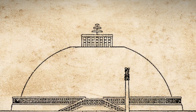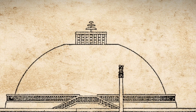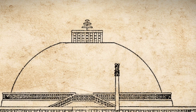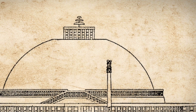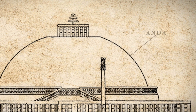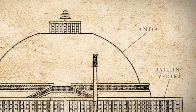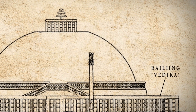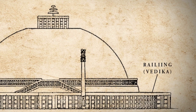To explain this, we take the example of Sanchi Stupa. Sanchi Stupa was built by Emperor Ashoka in around 250 BC. During this time, the dome-like structure of the stupa, which is called Anda, was encased in bricks by Emperor Ashoka. Apart from this, the railings around the stupa during this period were made of wood.